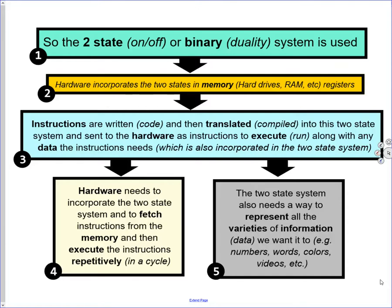With the two-state on/off binary system, all hardware — hard drives, memory, RAM, ROM — works with this two-state system. Instructions, your code, are written and then translated into this two-state system and executed by the hardware, along with the data that the code might need. For example, a game is the instructions and the high score is the data, all incorporated into the two-state system. The hardware needs to fetch instructions from memory, execute them cyclically, and the two-state system also needs a way to represent data — numbers, words, pictures, videos all converted to on/off.